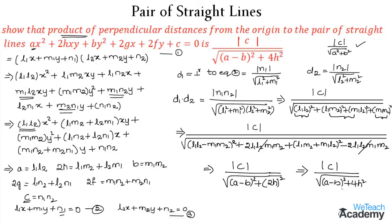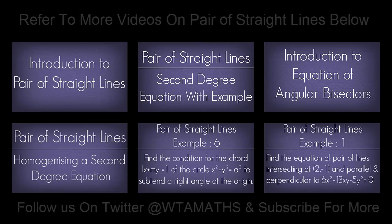This is exactly the condition we needed to prove — the product of perpendicular distances d₁·d₂ equals |c|/√((a−b)² + 4h²). Hope you understood the concept. For more videos visit our website VDG Academy. Thanks for watching. Have a nice day.